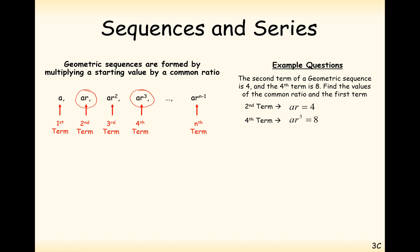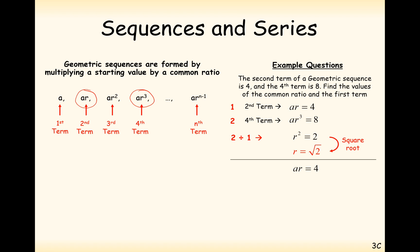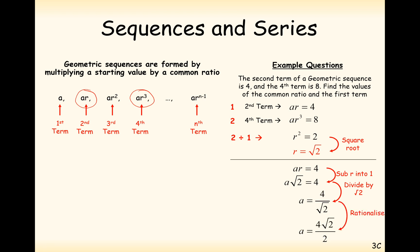The way we solve these two simultaneous equations is by dividing one by the other. Calling these equation 1 and equation 2, we do equation 2 divided by equation 1: that's AR cubed divided by AR, which gives us R squared, and 8 divided by 4 gives us 2. So R squared equals 2, meaning R is the square root of 2. Now substituting back into the easier expression, we get A is equal to 2 root 2.